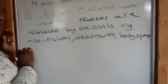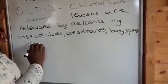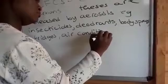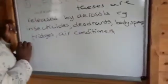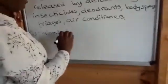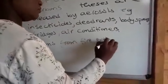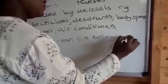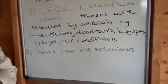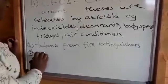CFCs are also released by our fridges and air conditioners, from fire exhibitions, and from volcanic eruptions. All these sources are sources of chlorine.